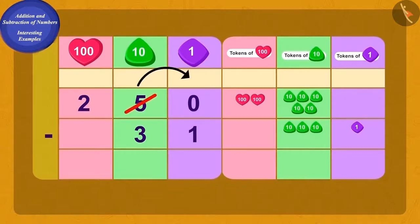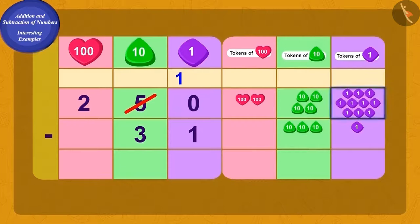We will borrow 1 tenth out of 5 tenths. Now we have 10 ones and 4 tenths. If we subtract 1 ones from 10 ones, how many remains? 9 ones. If we subtract 3 tenths from 4 tenths, how many tenths remain? 1 tenth.